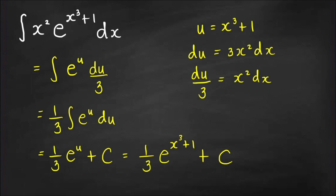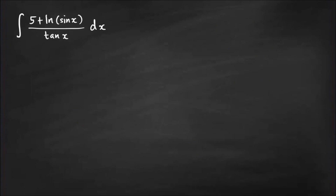Don't forget to write u back in terms of x, since we are integrating with respect to x. The final answer is (1/3)e^(x³+1) + C. Now let's consider the next integral: ∫(5 + ln(sin x)) / tan x dx.